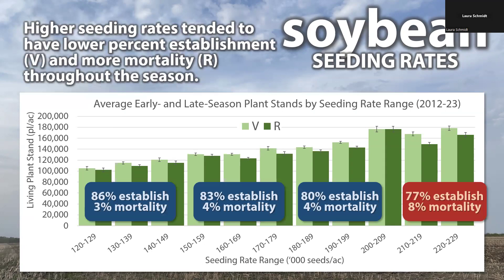We're typically losing about 5% of plants from the crop competing with and thinning itself out. Breaking that down: at seeding rates of 120 to 140,000 seeds per acre, on average 86% establish and 3% die off during the season. For 150 to 170,000 seeds per acre, 83% are establishing with 4% dying off. For 180 to 200,000, we see 80% establishment and 4% mortality. Then above 200,000 seeds per acre, that's where it really drops off with 77% establishment and 8% of plants dying off during the growing season. We typically see lower percent establishment and more mortality as seeding rates increase.